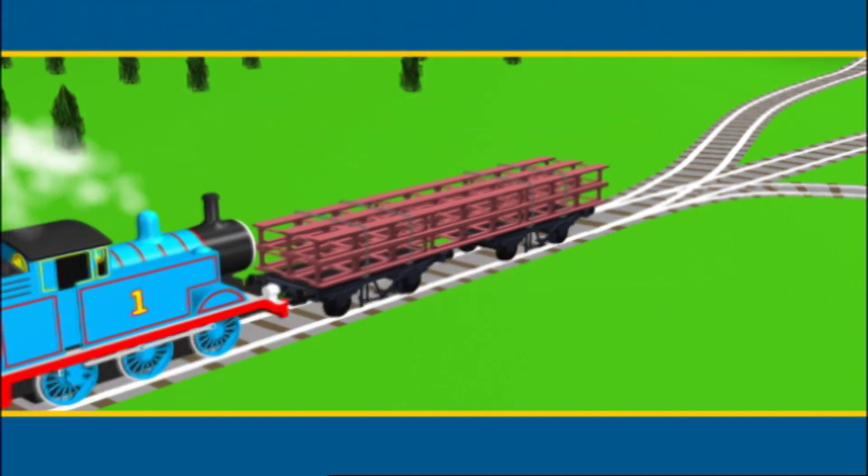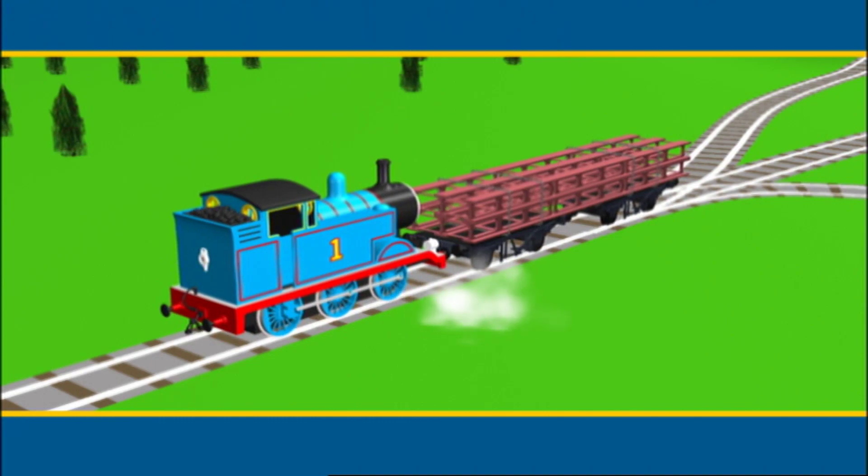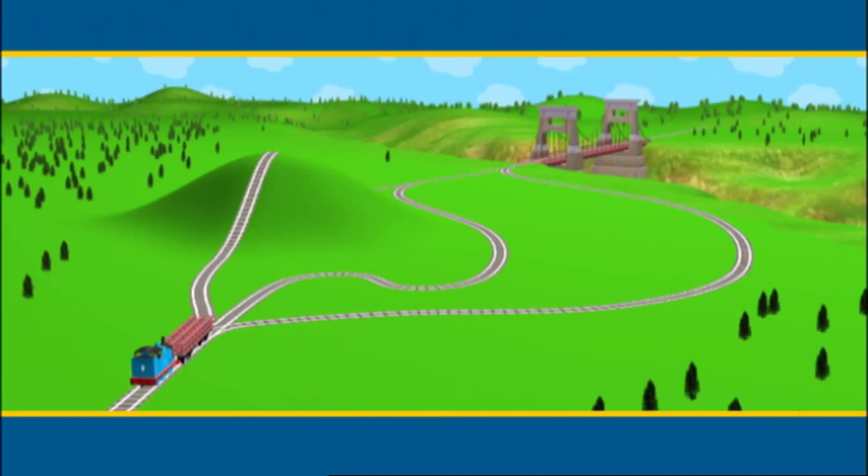Thomas is taking the bridge section to the Sodor Suspension Bridge. There are three ways to get there, but Thomas doesn't know which is the easiest way to go. Can you help him?